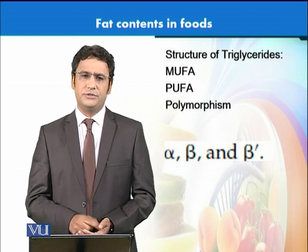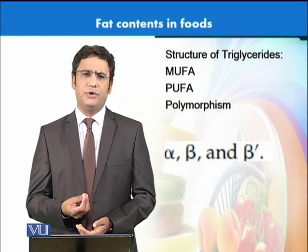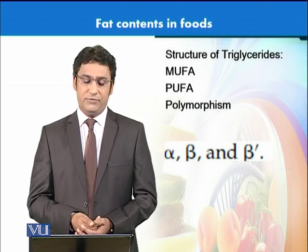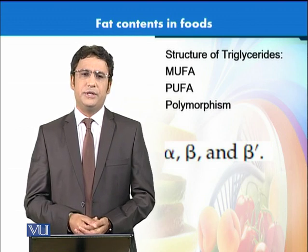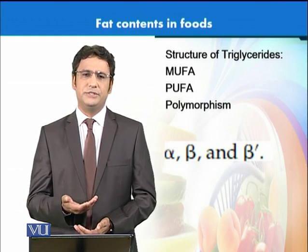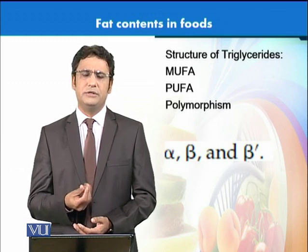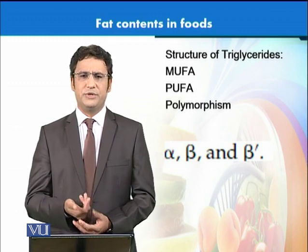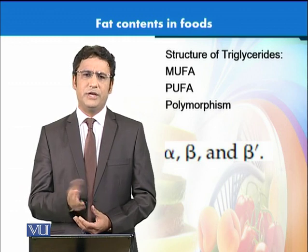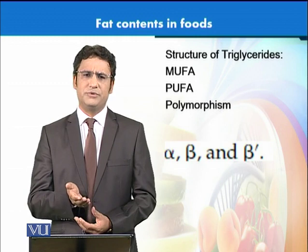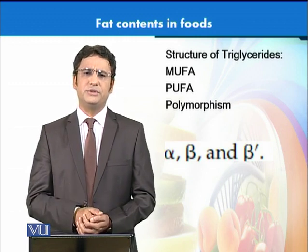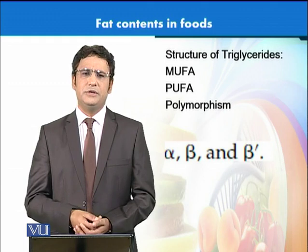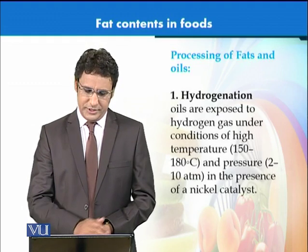The crystal structure of these molecules can exist in different forms, known as polymorphism. These forms are classified as alpha, beta, and beta-prime crystals, and they define the physical appearance of the fats. For example, granular fats are preferred by most consumers, and different crystal types produce different textures. It is essentially the producer's choice to produce a particular crystal form so that the final product has desirable physical attributes.